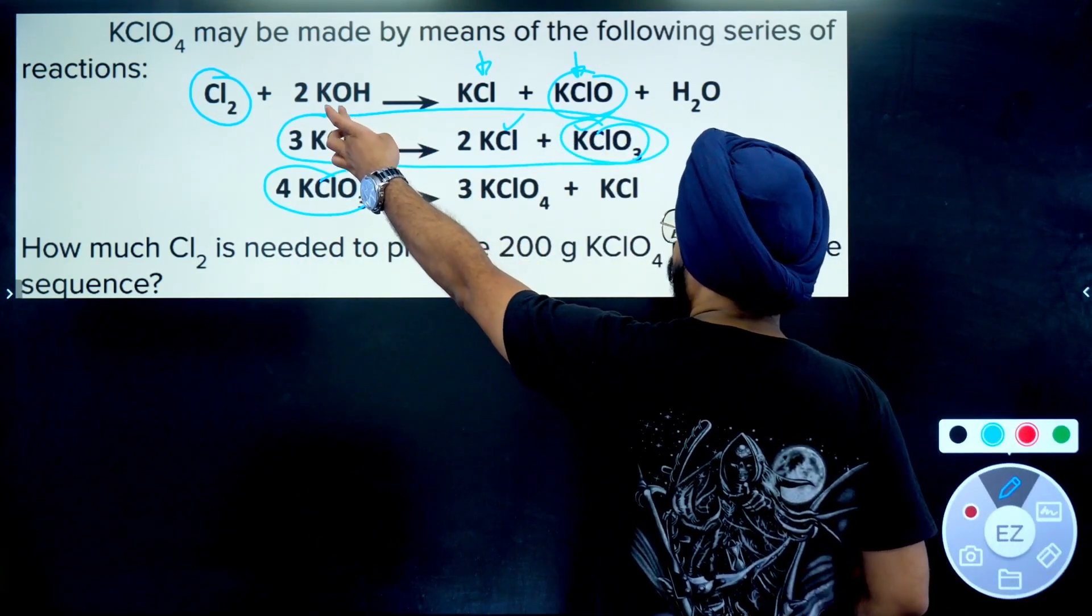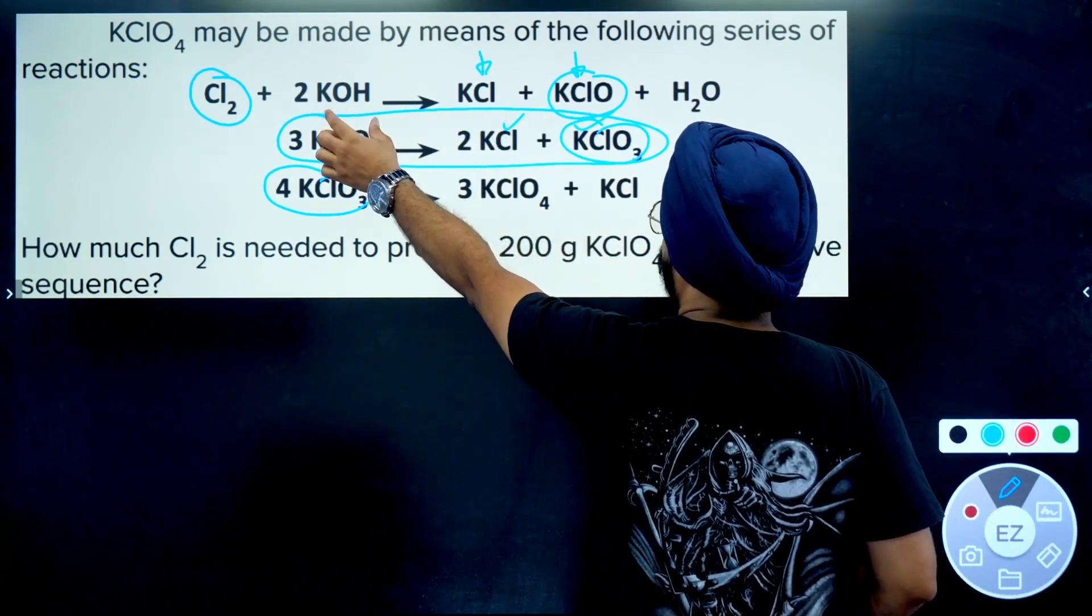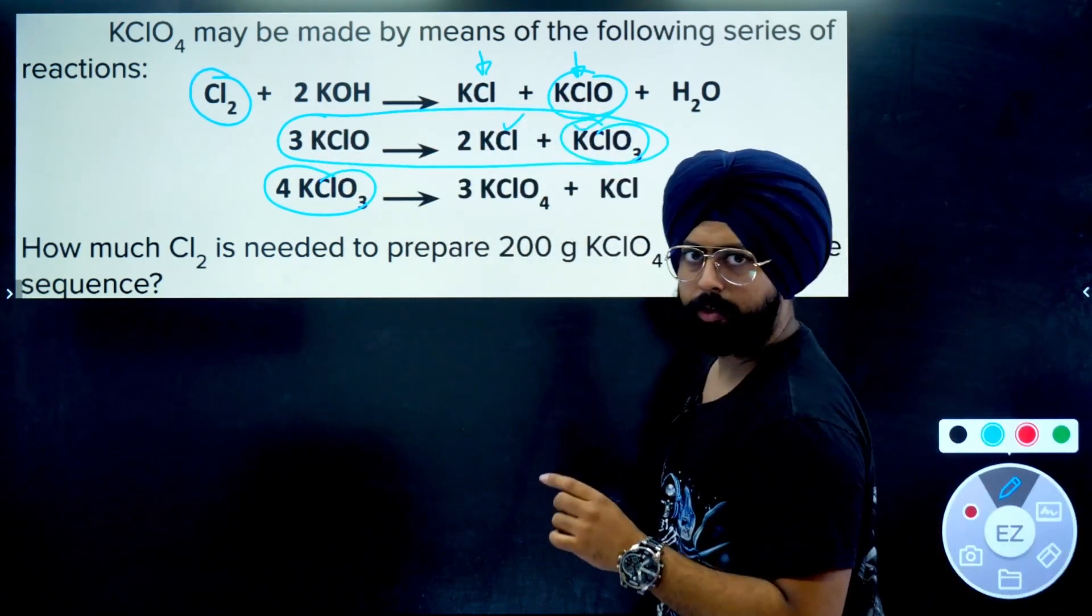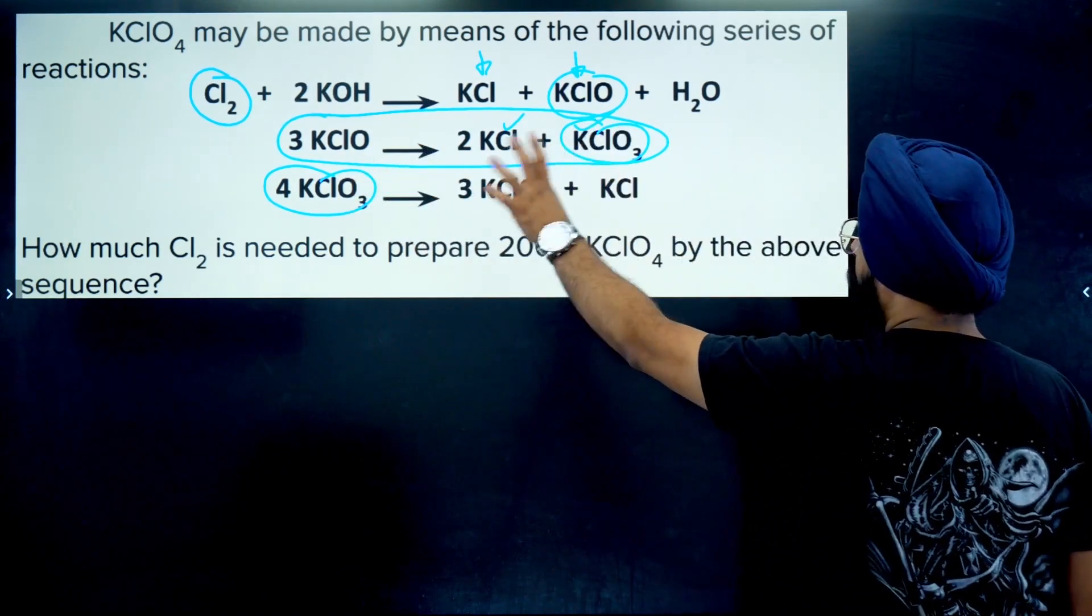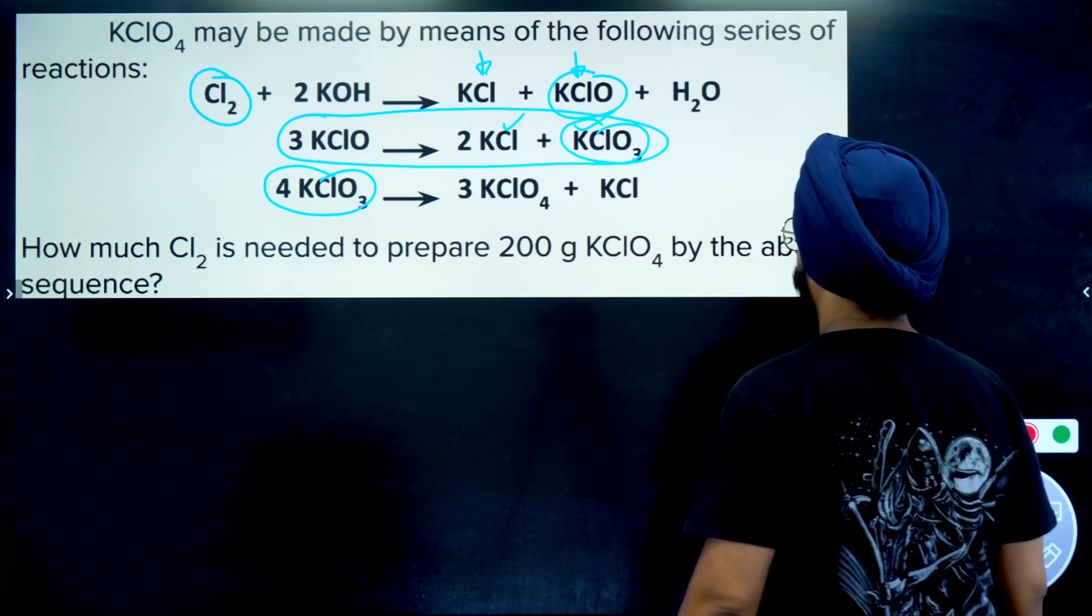Similarly with potassium. Potassium is also getting distributed. From here it goes to two different species. From here it goes to two different species. So we can't use potassium either for the principle of atomic conservation.